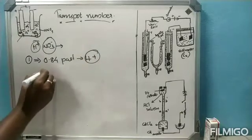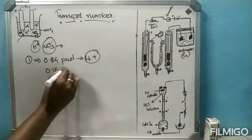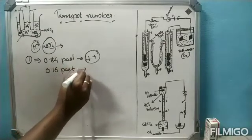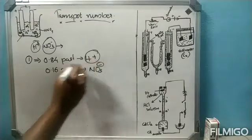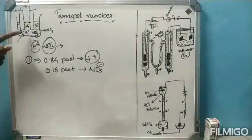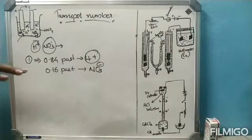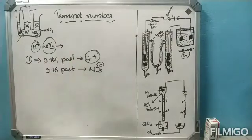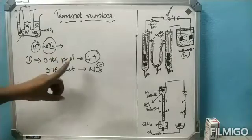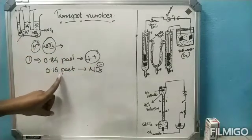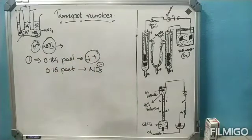At the same time, 0.16 part of this current is transported due to NO₃⁻ ions. Now, we expect that both H⁺ and NO₃⁻ ions carry the same quantity of electricity, but a different fraction of current is carried by NO₃⁻. This is due to the difference in the speed of ions.